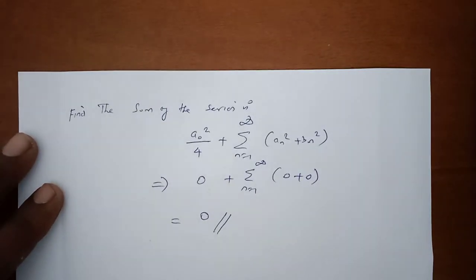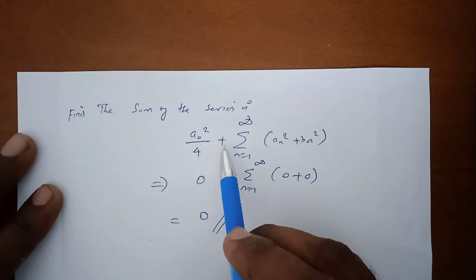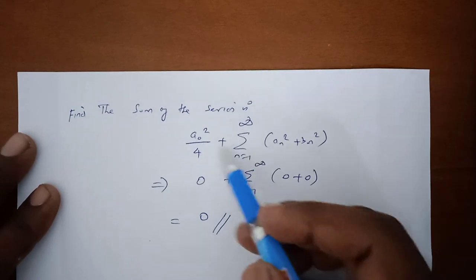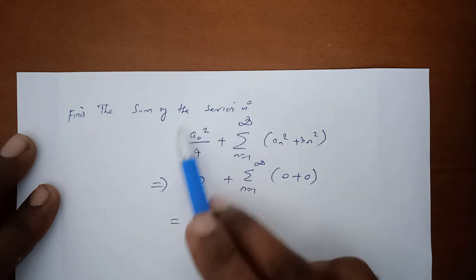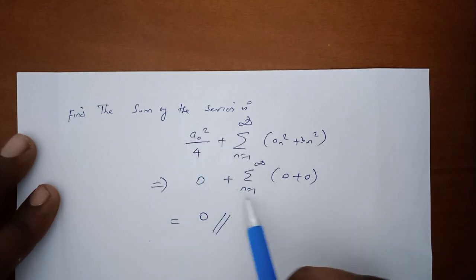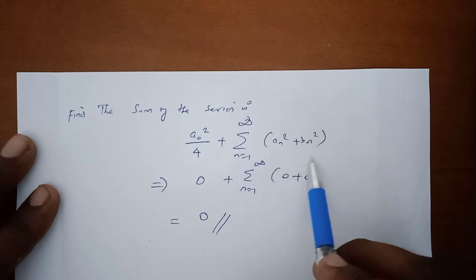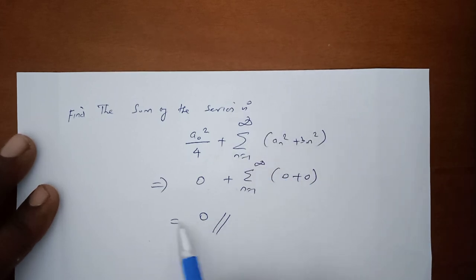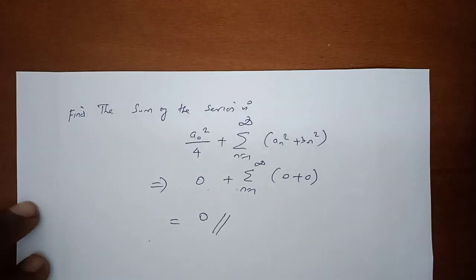Finally, applying Parseval's formula: a₀²/4 + sigma n=1 to infinity of (aₙ² + bₙ²). Since a₀ = 0, aₙ = 0, and bₙ = 0, every term is zero. Hence the sum of the series equals 0.